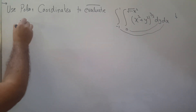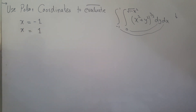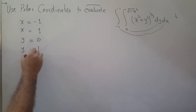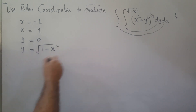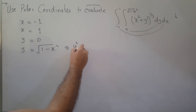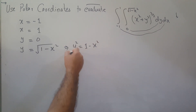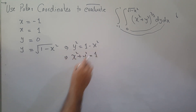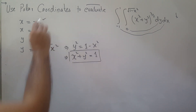The x lower limit is minus 1 and the upper limit is 1. The y lower limit is 0 and the y upper limit is √(1 minus x squared). We can simplify this: squaring both sides gives y squared equals 1 minus x squared, and moving x squared to the left gives x squared plus y squared equals 1. This is an equation of a circle, and the limits x equals minus 1, x equals 1, and y equals 0 are equations of lines.